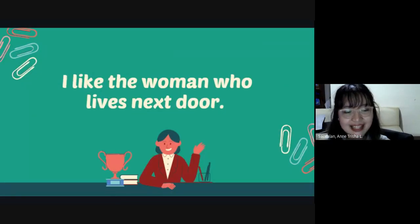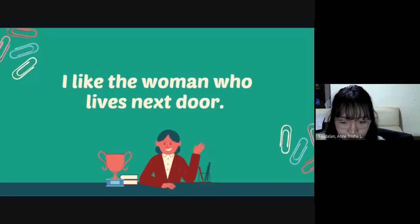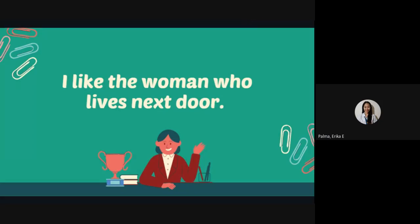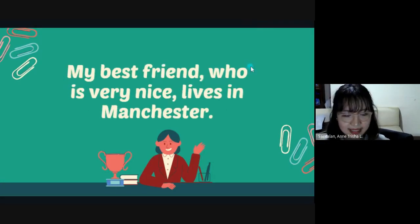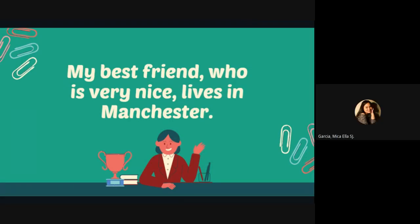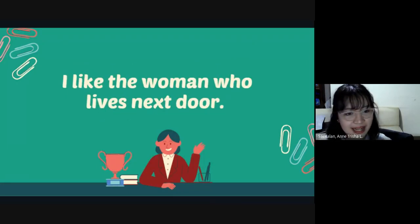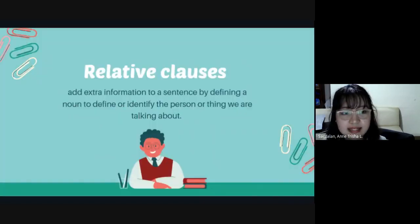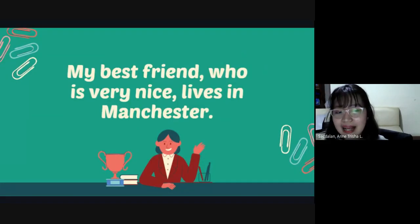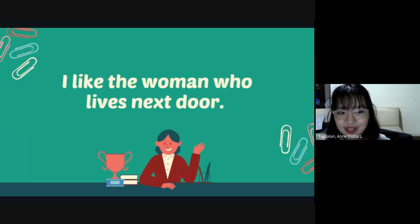So read the sentence that I flashed on the screen. Anyone? Okay, Erika. 'I like the woman who lives next door.' Now read the next sentence. Okay, Mikaela. 'My best friend, who is very nice, lives in Manchester.' As we can see, this sentence has clauses. And what we call those clauses is relative clause. Later, we will differentiate the difference between these two sentences — what is defining clause and what is non-defining clause.